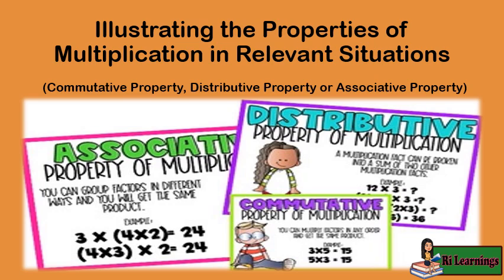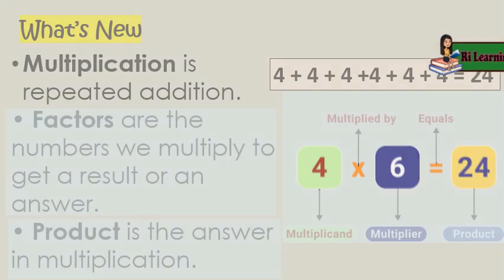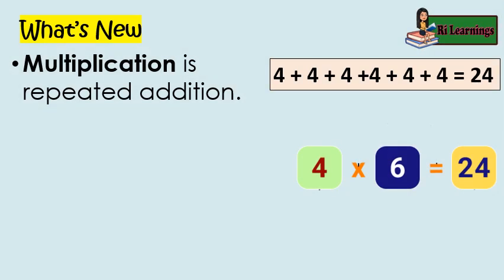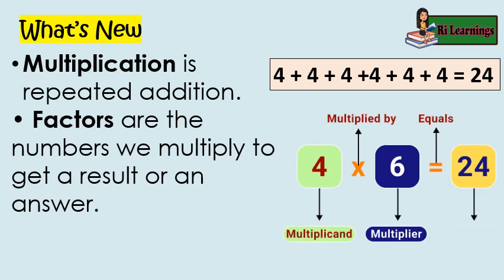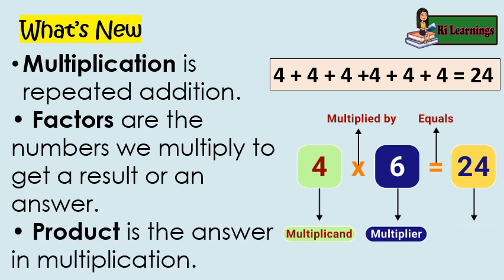Illustrating the Properties of Multiplication in Relevant Situations: Commutative Property, Distributive Property, or Associative Property. Multiplication is Repeated Addition. Factors are the numbers we multiply to get a result or an answer. The multiplicand and multiplier give us the product, which is the answer in multiplication.